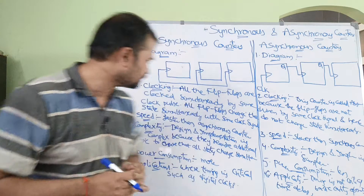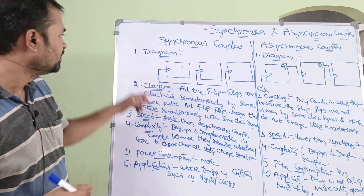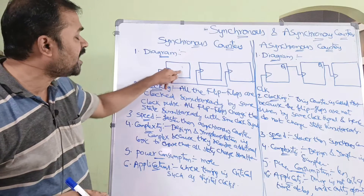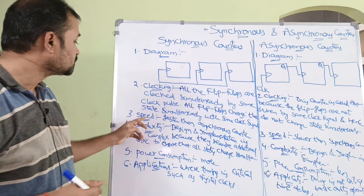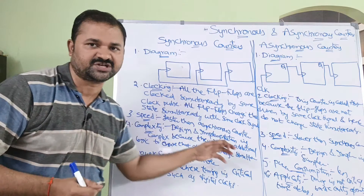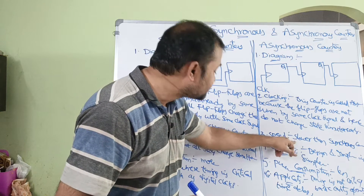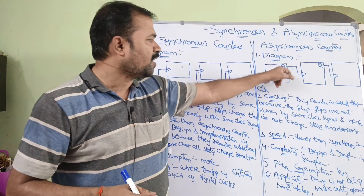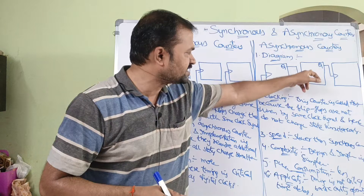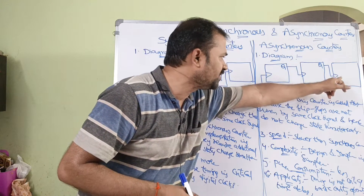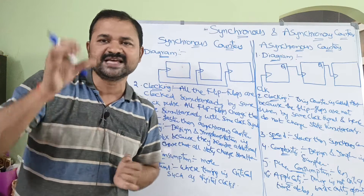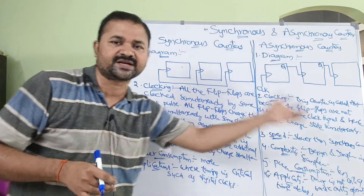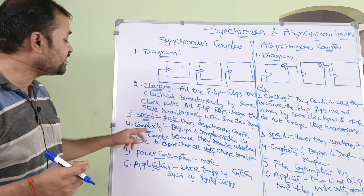The third difference is speed. Synchronous counters are faster than asynchronous counters because the same clock pulse is applied on all the flip-flops simultaneously. Asynchronous counters are slower because an external clock pulse is applied only to the first flip-flop, whose output feeds as the clock to the second, and so on. There is some propagation delay between each stage, which is why asynchronous counters are slower.